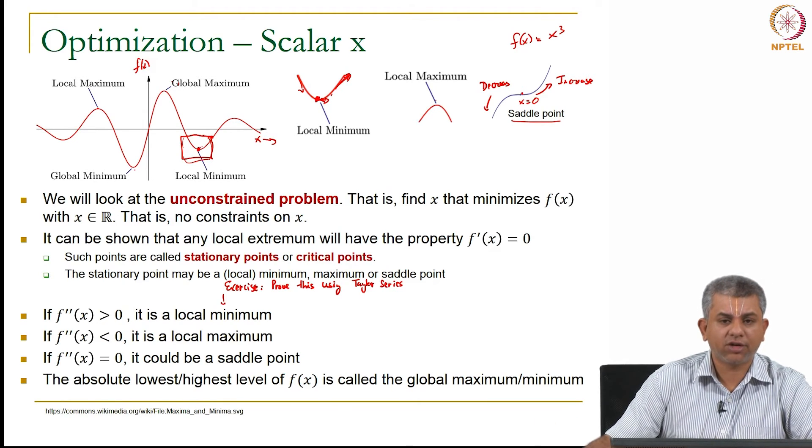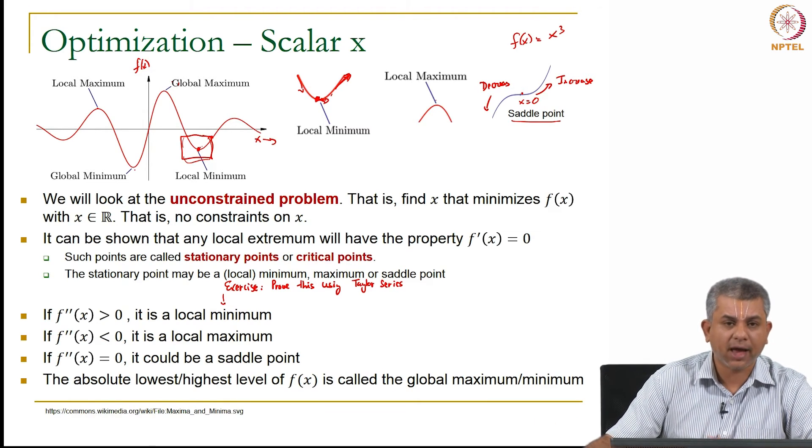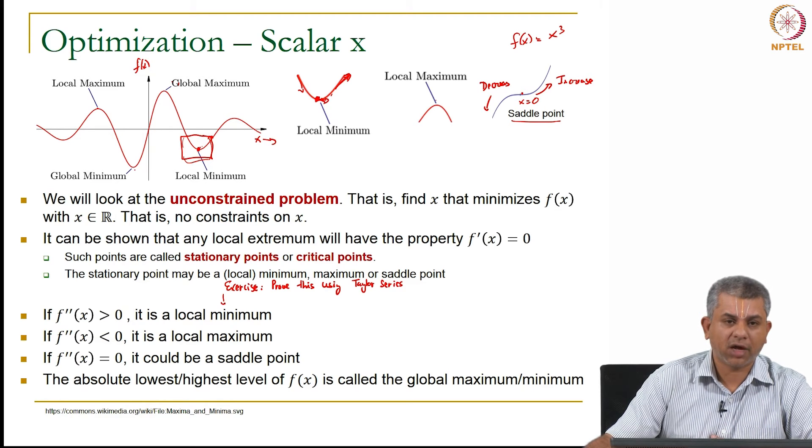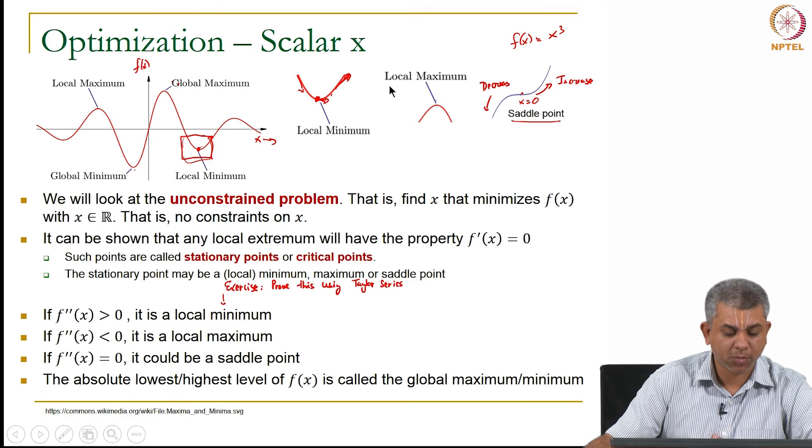All of you are familiar with the notation of global maximum or minimum. This is the absolute maximum or the absolute minimum that you will get over all of space.